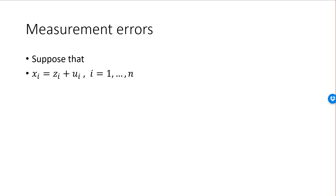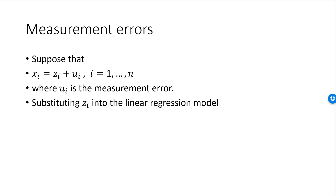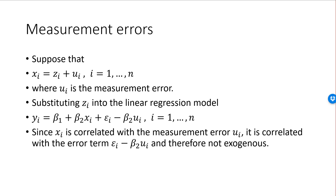To summarize: if the measurement xi equals the true value zi plus measurement error ui, then substituting zi into the linear regression model gives a regression model expressed in terms of the observed xi, but with a different error term. Unfortunately, this new error term contains the measurement error, and that is a problem since x is correlated with the measurement error. That is the reason the OLS estimator is inconsistent and biased — the x variable is not exogenous in this regression model.